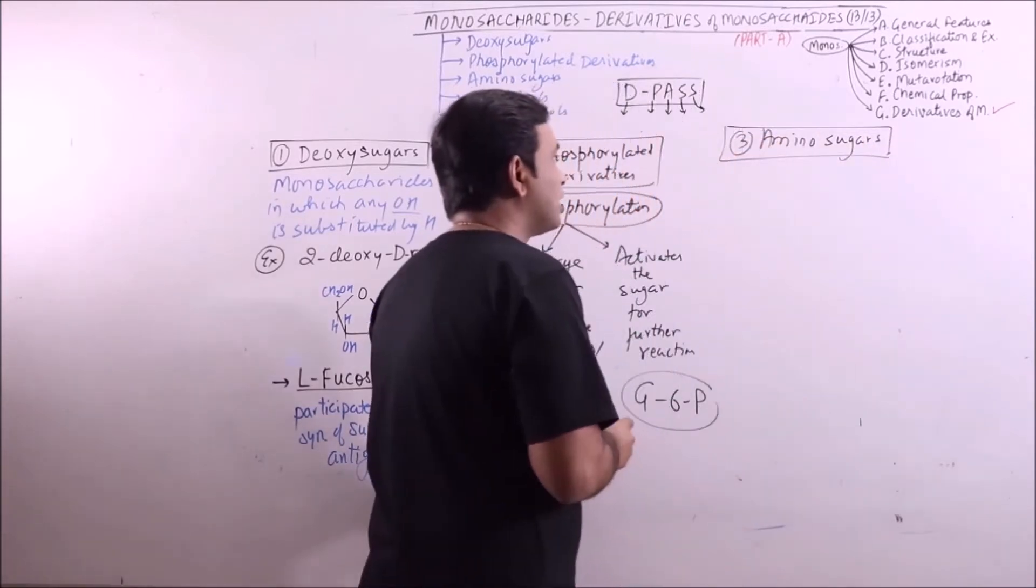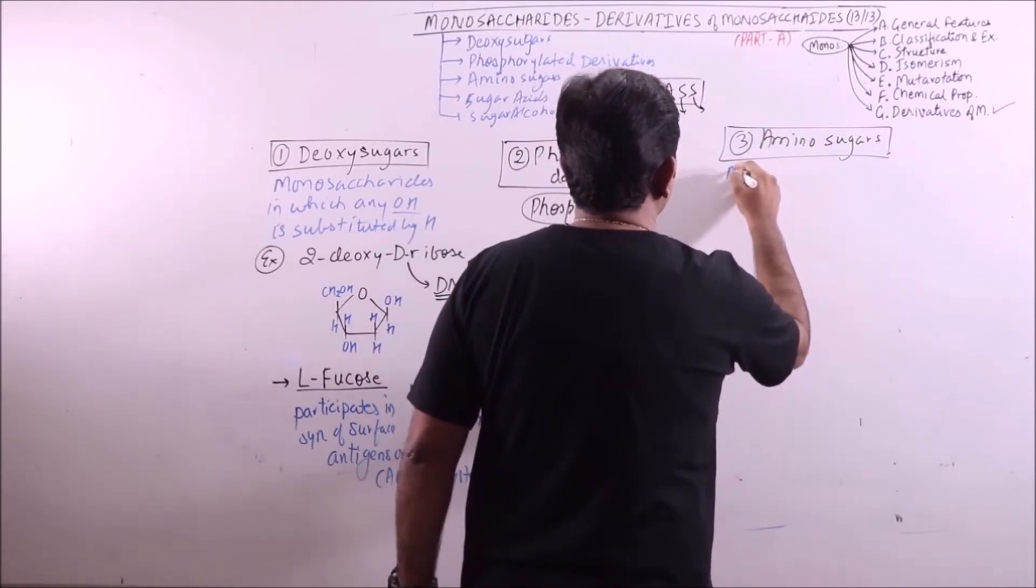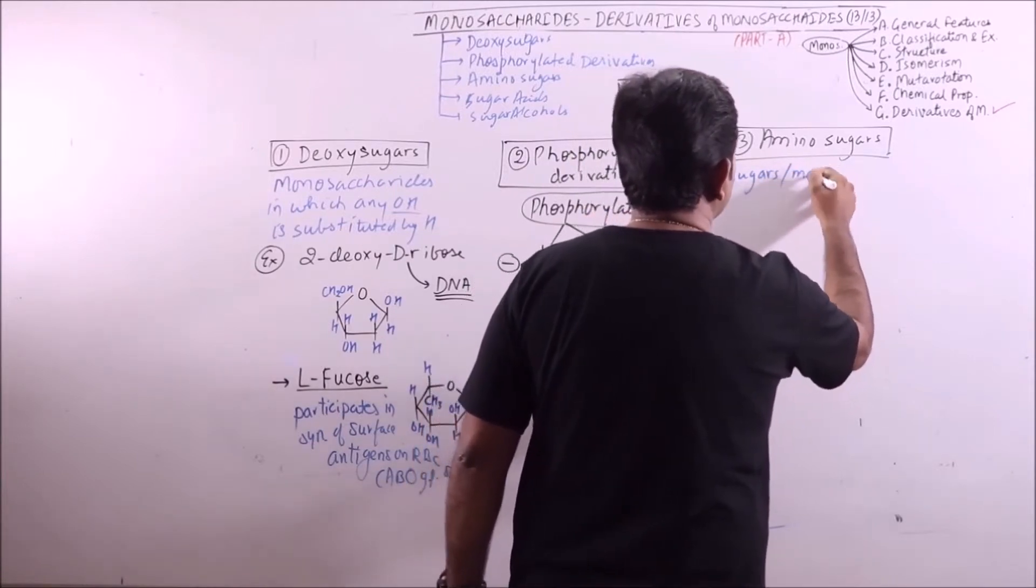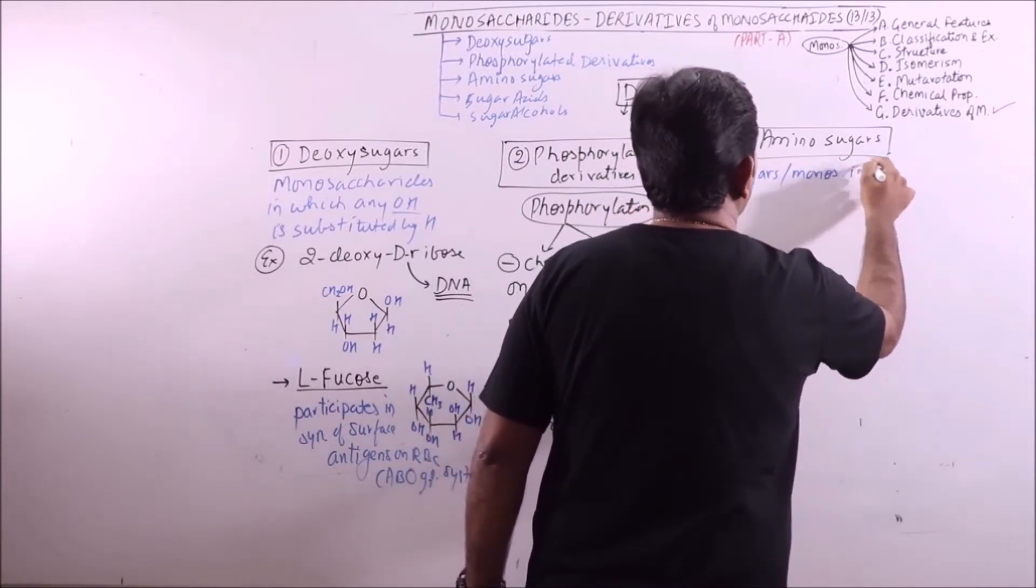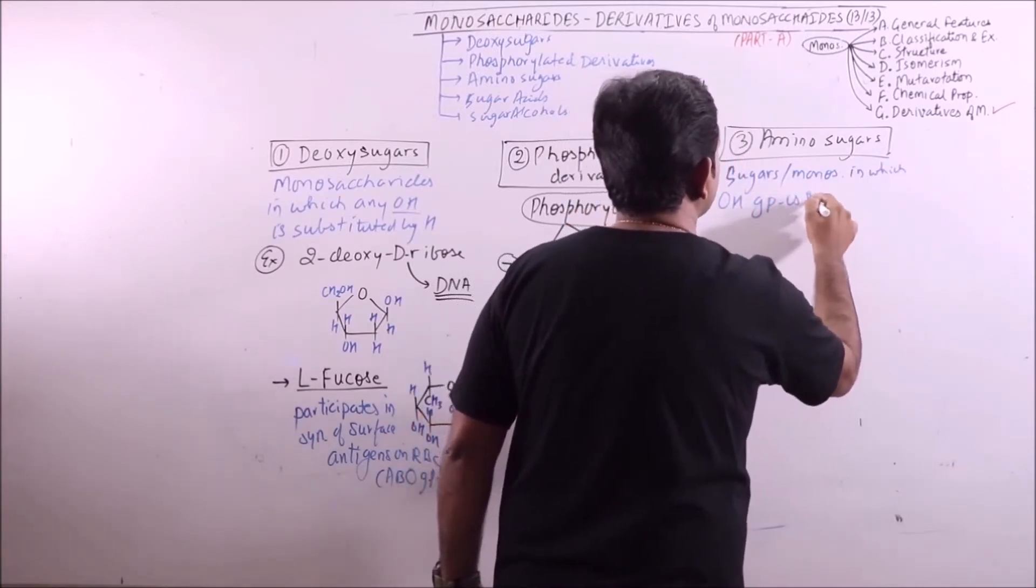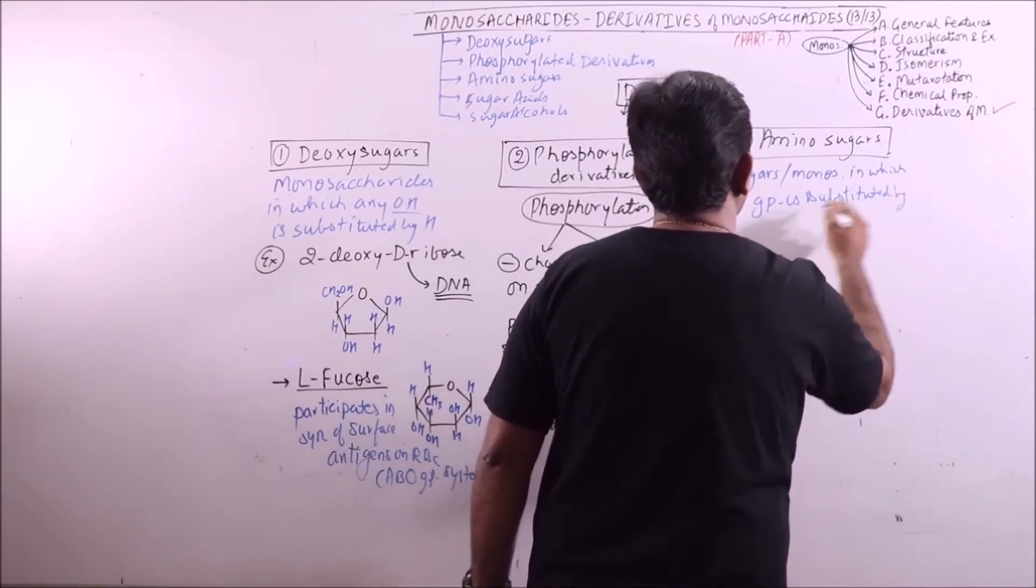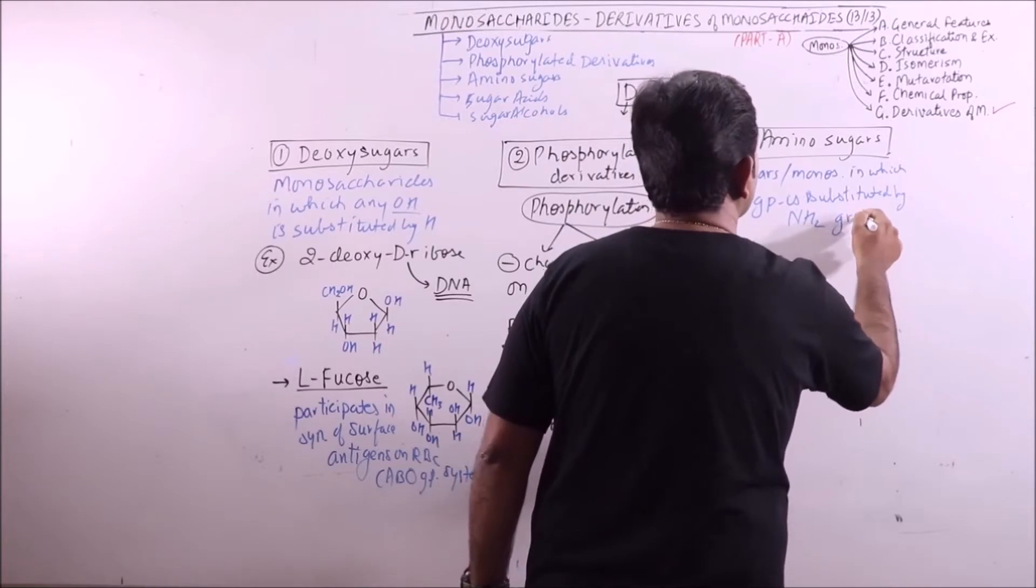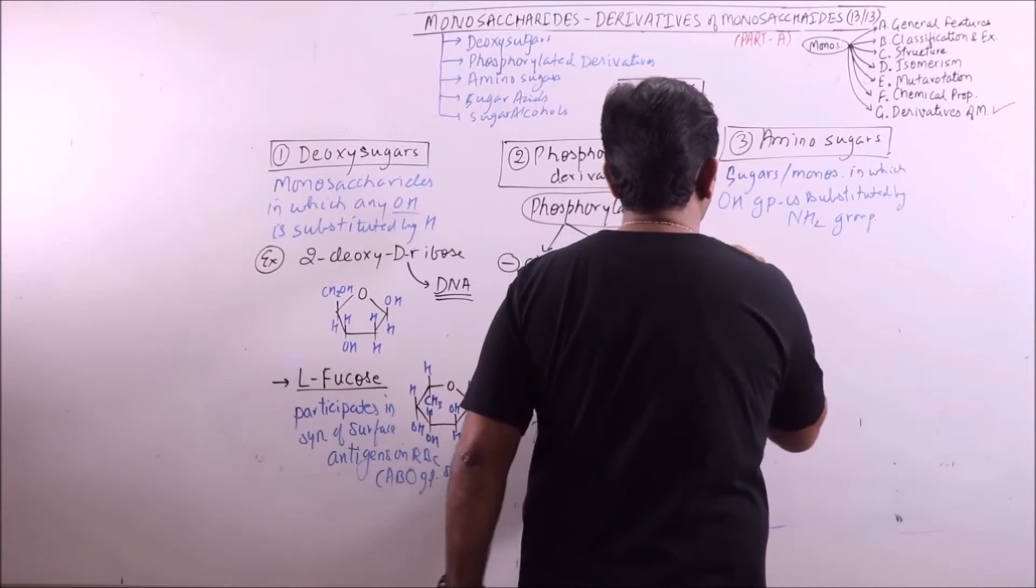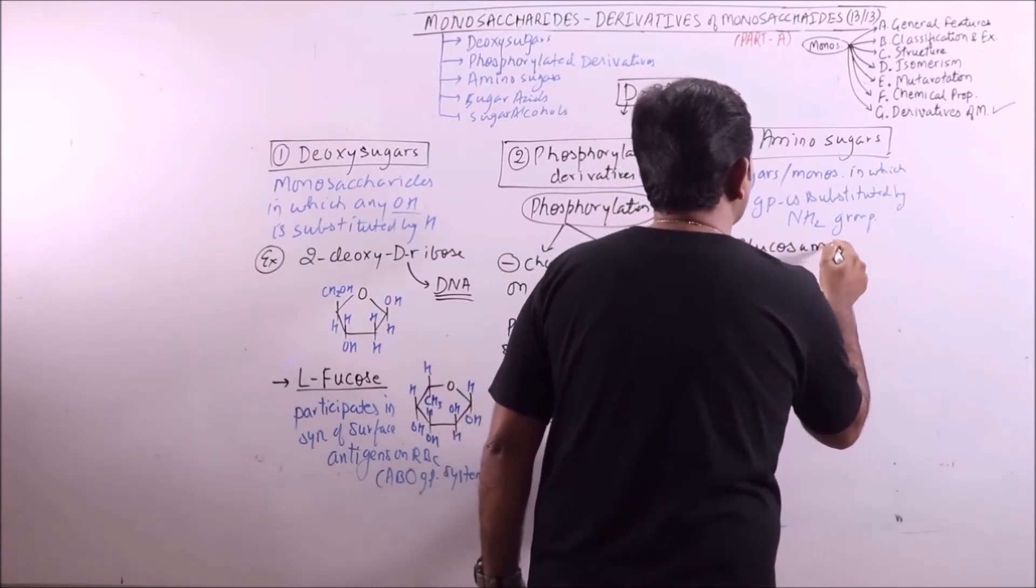What are amino sugars? Amino sugars are those sugars or monosaccharides in which hydroxyl group is replaced or substituted by ammonia group. For example, glucosamine.